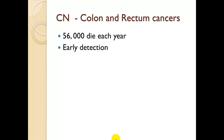Clinical note: colon and rectum cancers. 56,000 die each year, and the key is early detection. There are a lot of lymphatic structures in the area, and if it metastasizes, it will spread to other organs. These cancers can spread to other organ systems very easily.